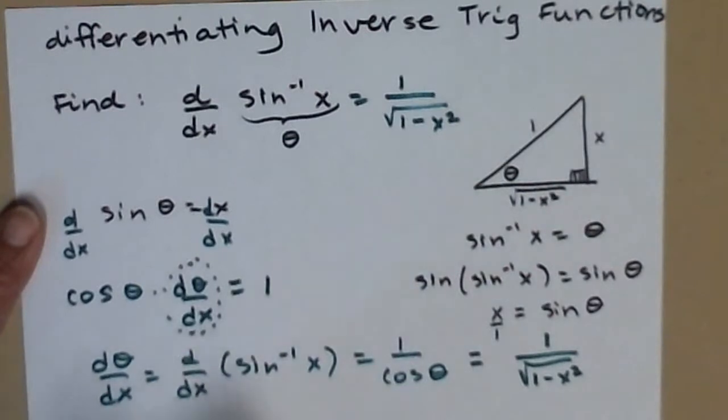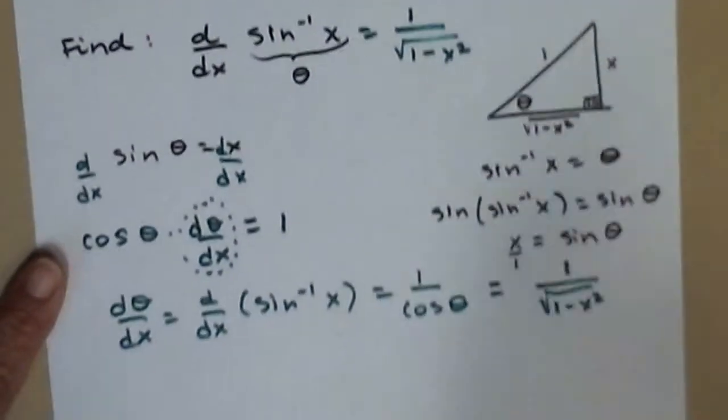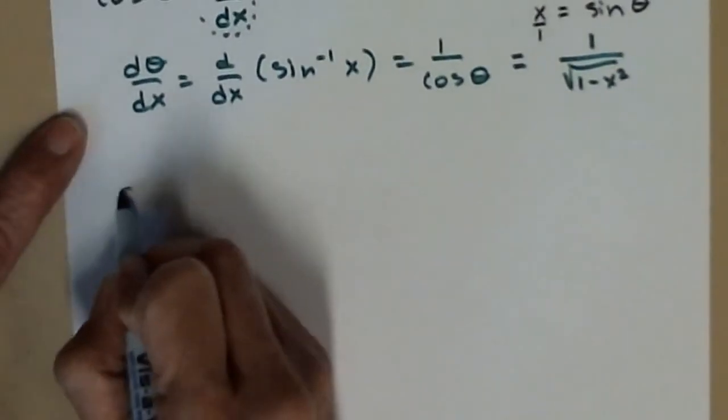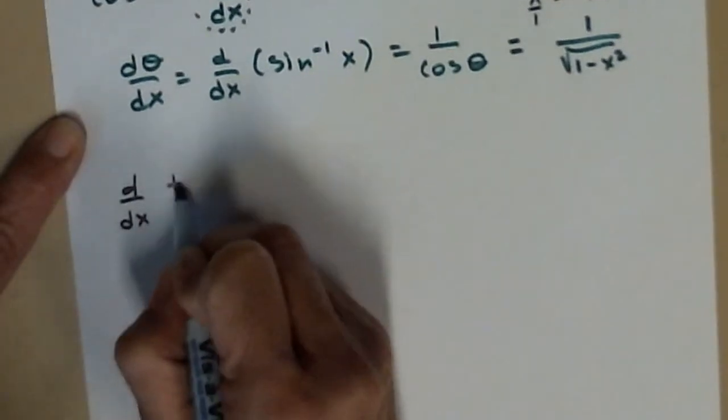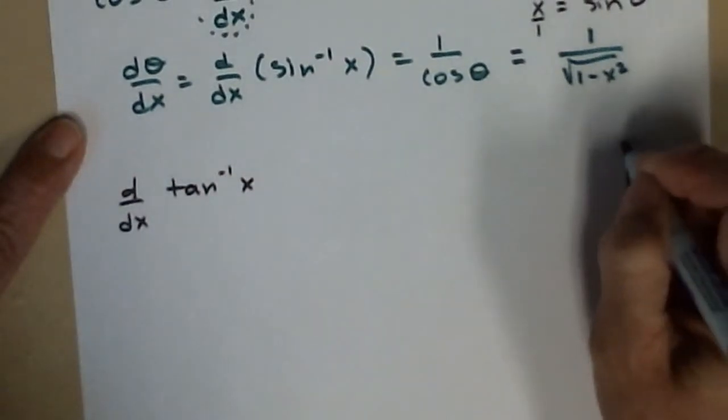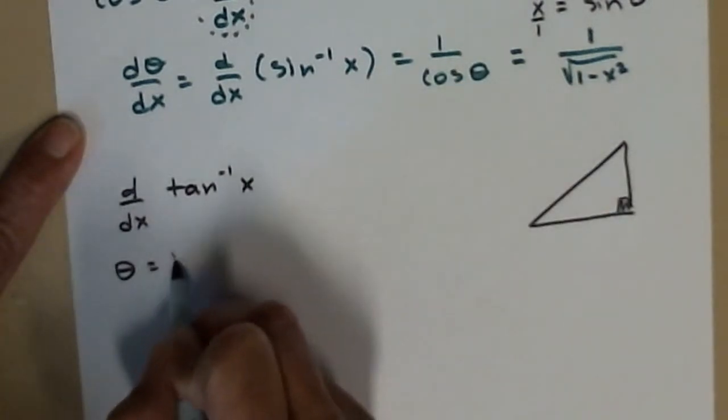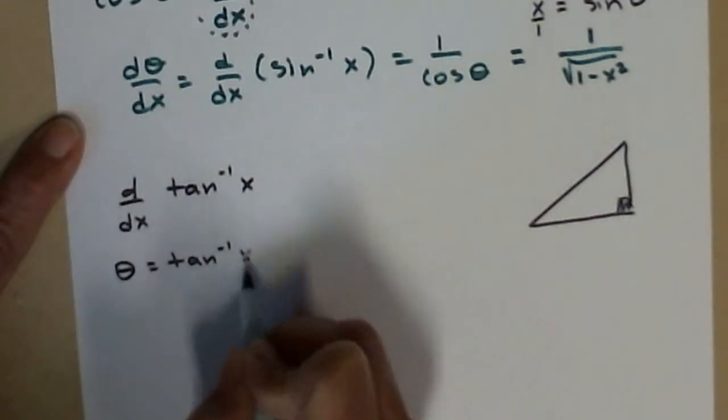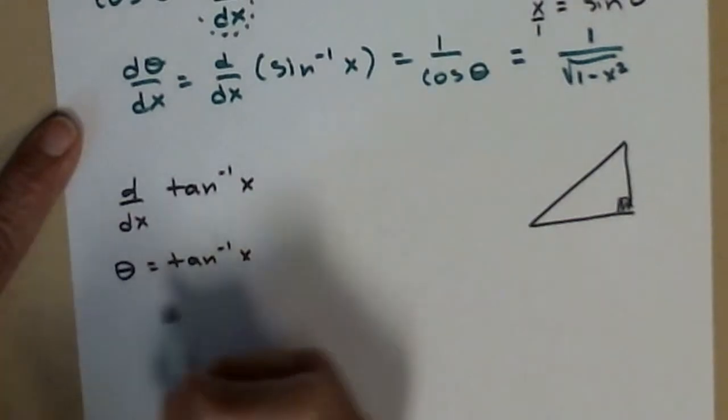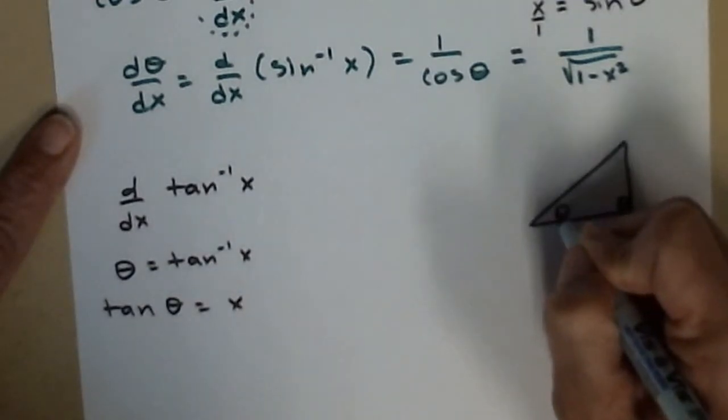Now you can do this with all of the trig functions following that same pattern. So if I write just one more down quickly, if we were to do the derivative with respect to x of the inverse tangent of x, I would draw another triangle. I would say, okay, so the inverse tangent, that's just another name for an angle, so I'll give it an angle name.